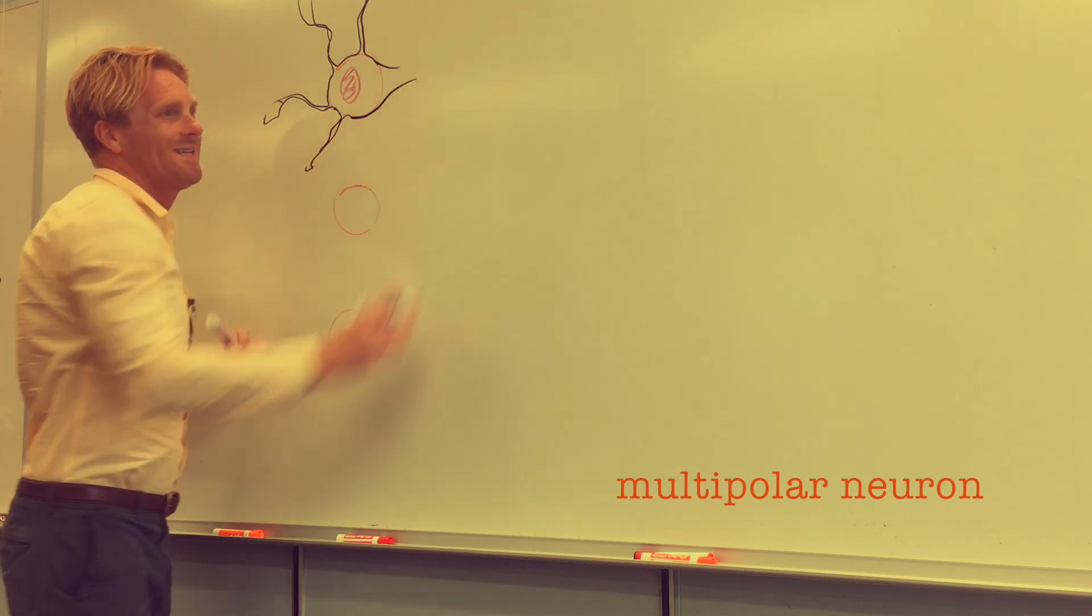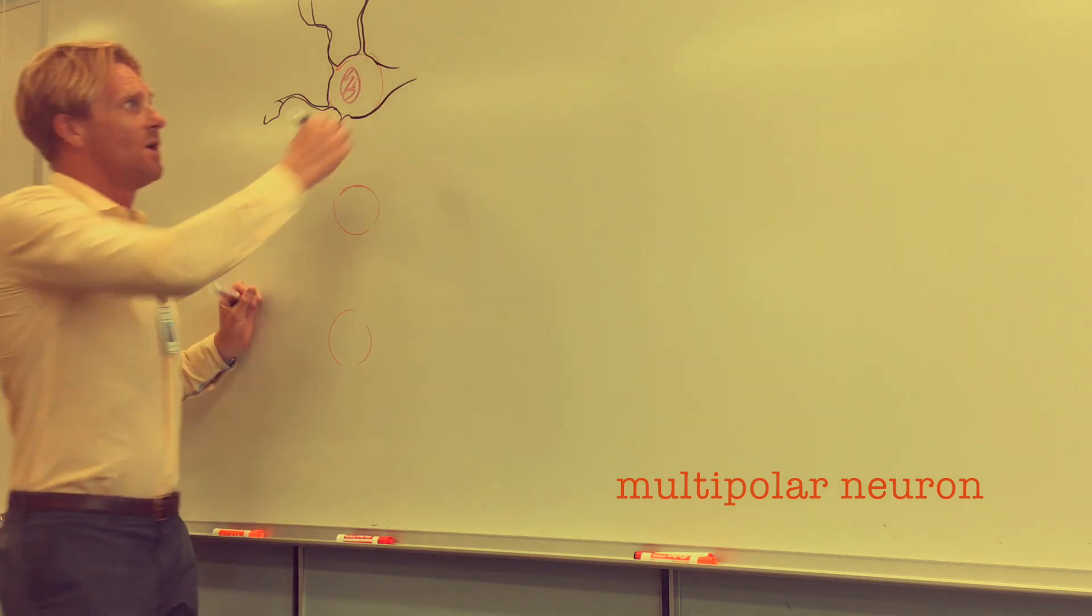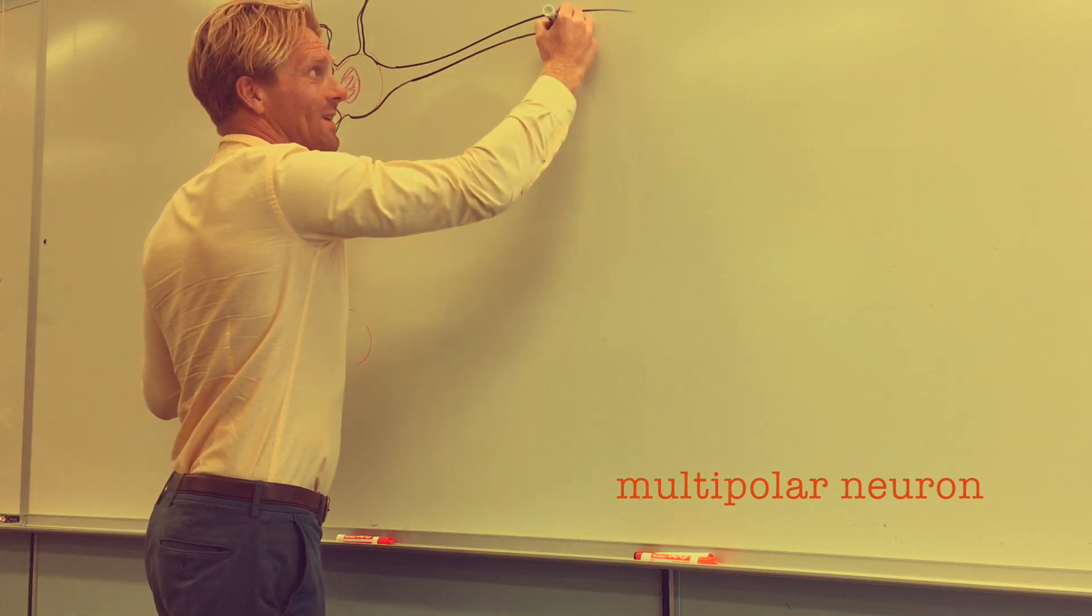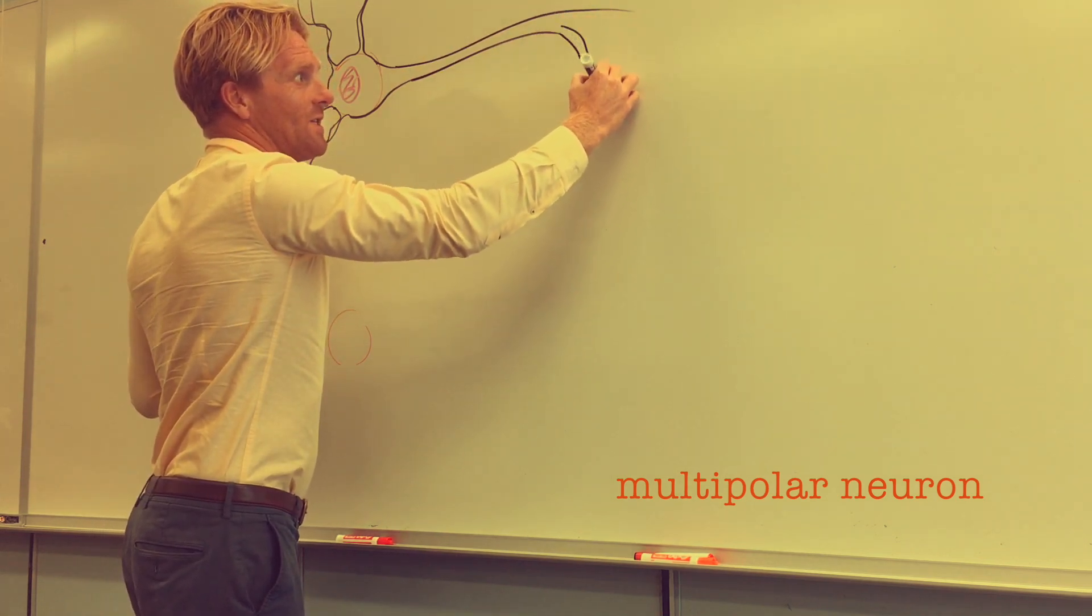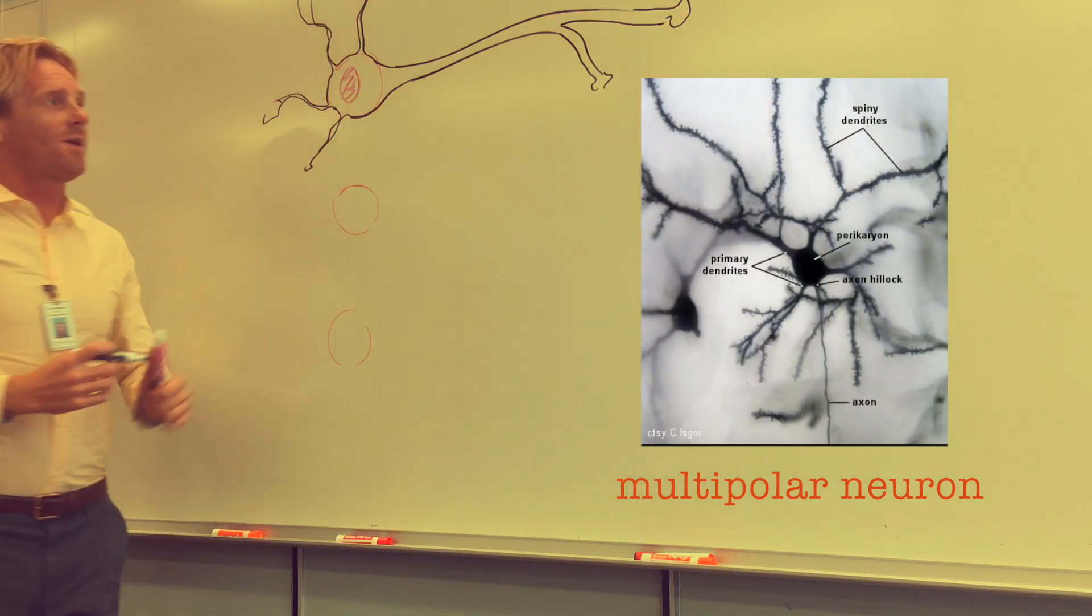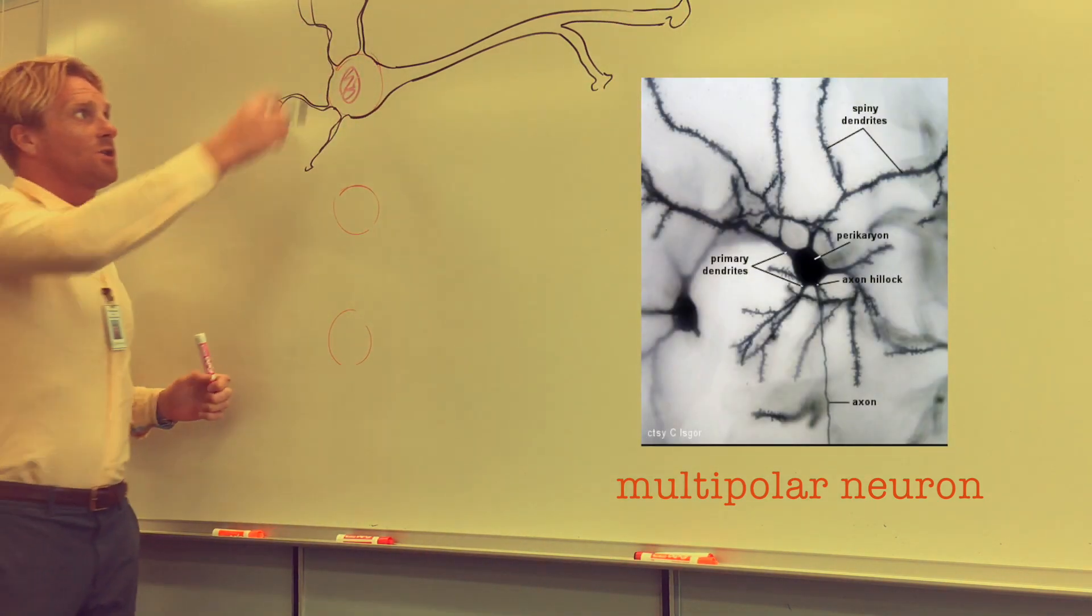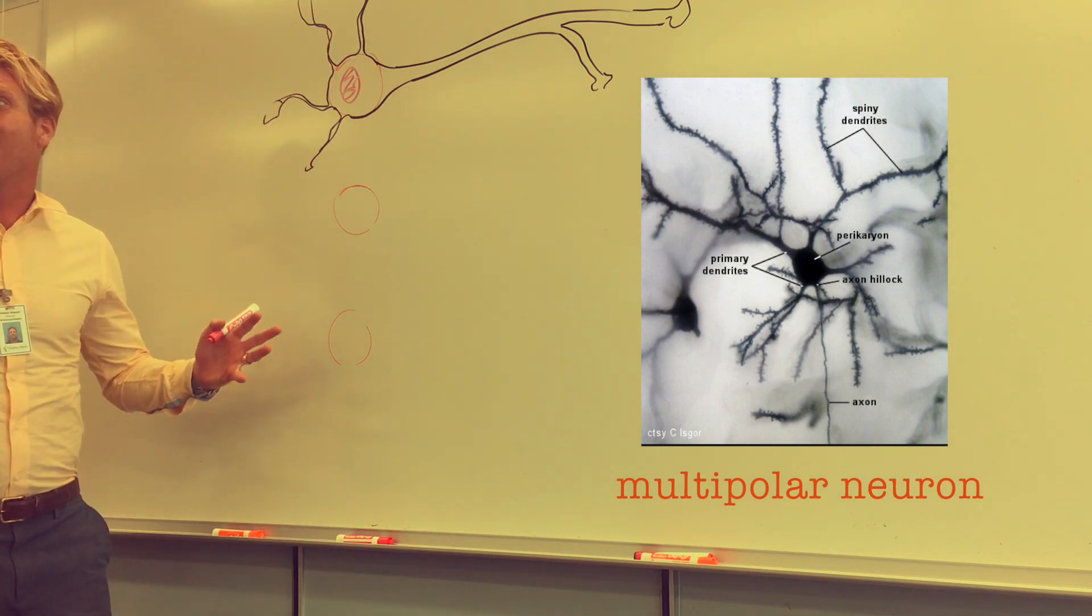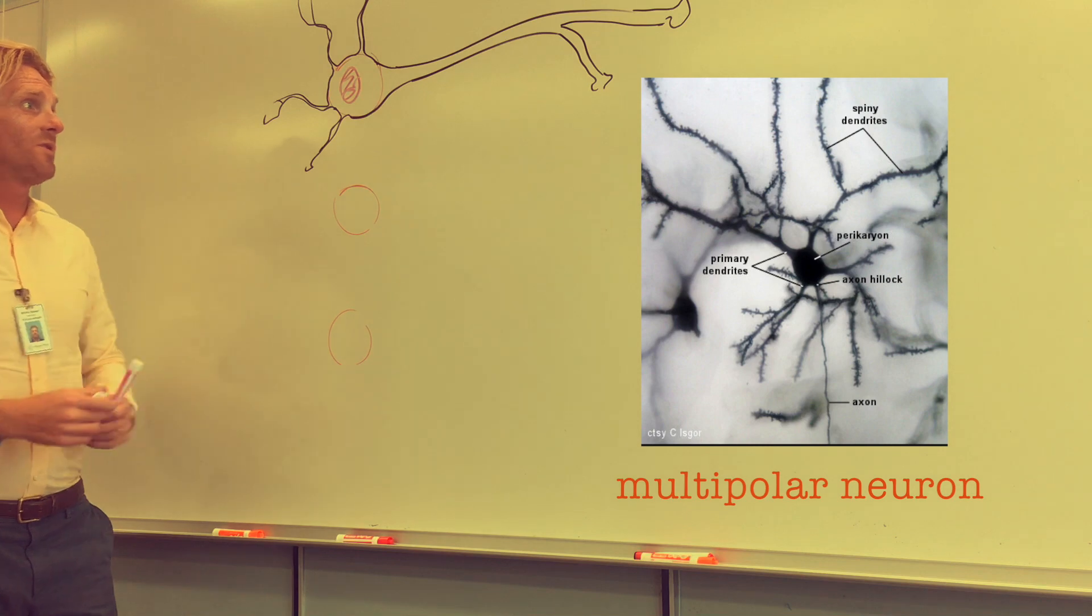Then on the other side, that cell body condenses into an axon hillock, which then turns into an axon. Now that axon can branch at some locations where it'll innervate different cells, or it may not branch, but you'll have a longer axon and shorter dendrites that surround that cell body. Ninety-seven percent of our neurons are multipolar, just like this.